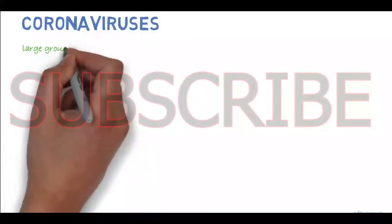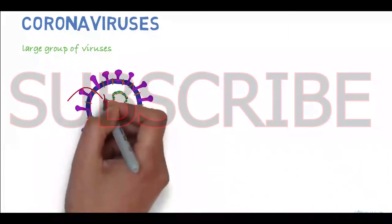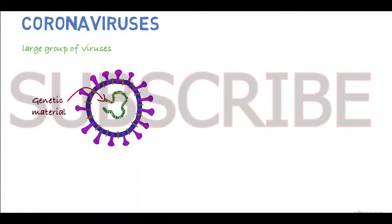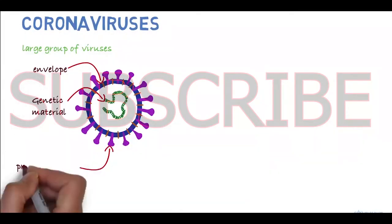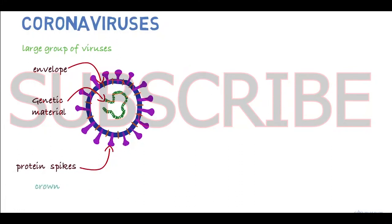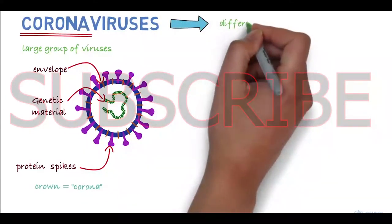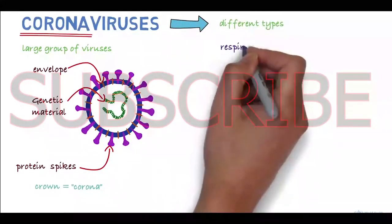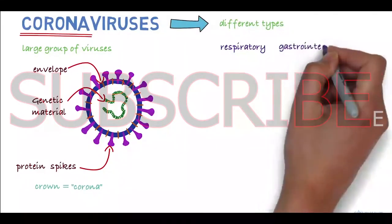Coronaviruses are a large group of viruses. They consist of a core of genetic material surrounded by an envelope with protein spikes. This gives it the appearance of a crown. Crown in Latin is called corona, and that's how these viruses get their name. There are different types of coronaviruses that cause respiratory and sometimes gastrointestinal symptoms.